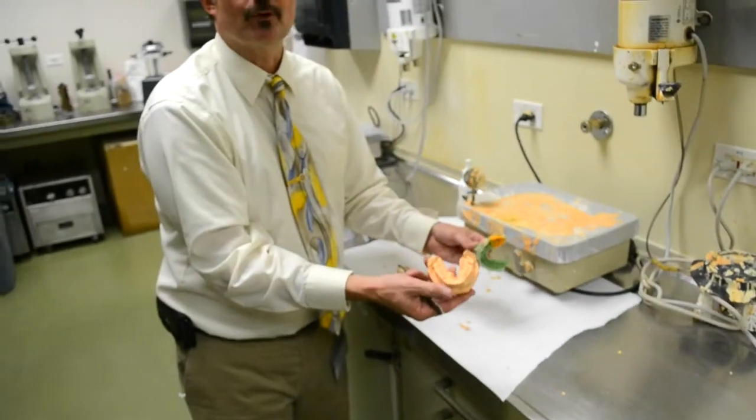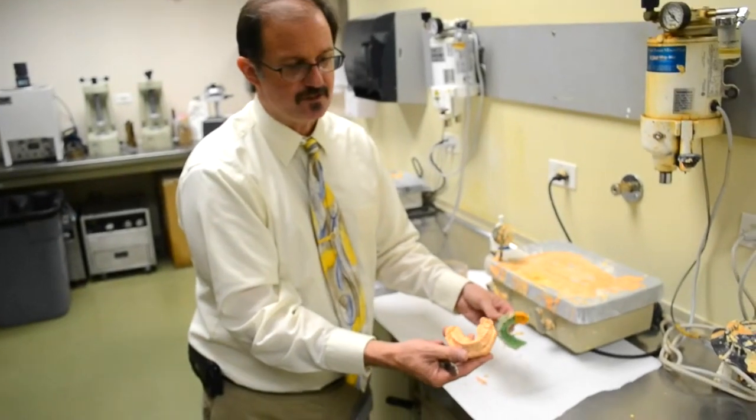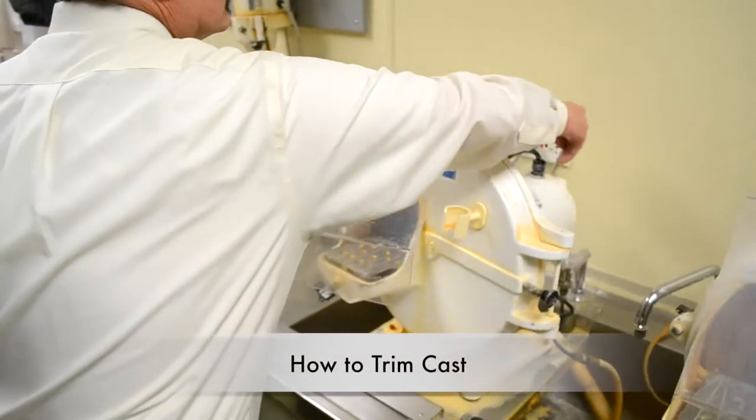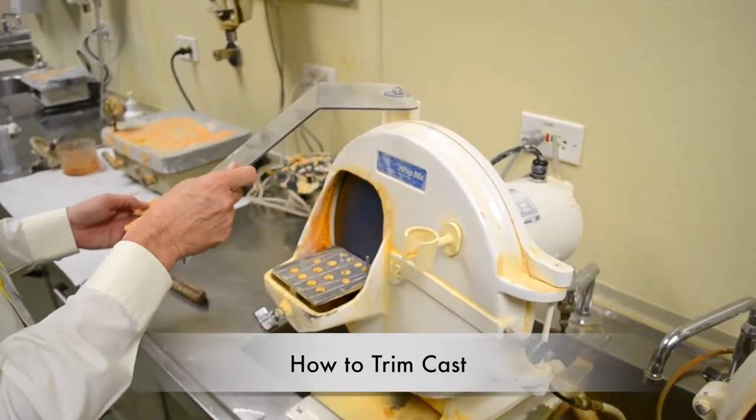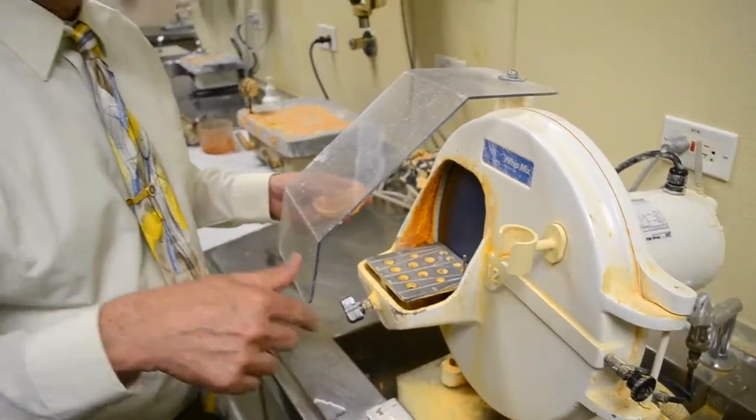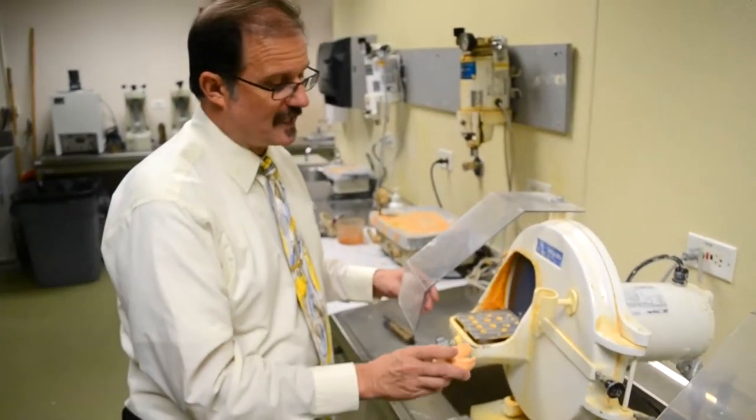Downstairs you'll need three pours: one for master cast, two for solid cast sent to the lab. Now we're going to trim this. Best way to trim this - when you're in the lab, you have to wear safety glasses.